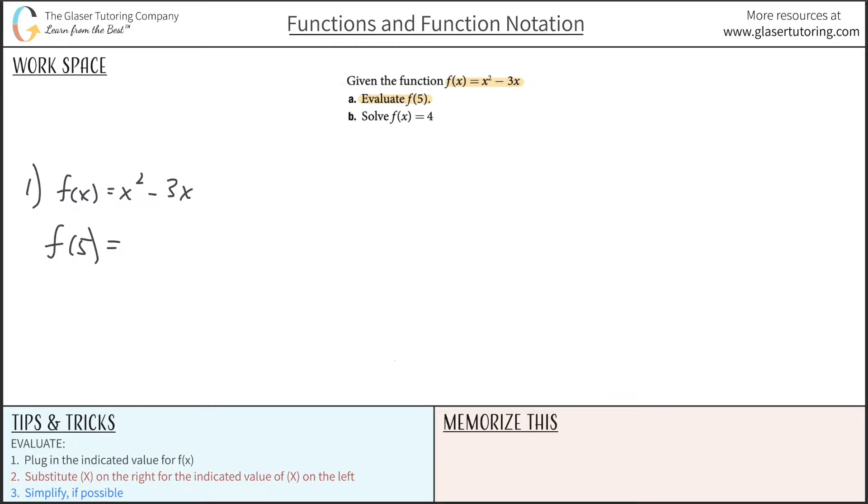So that means on the right-hand side now, wherever you see x, plug a 5 in for it. And we don't really need parentheses here, but I like to use them because in case if this value were negative, you'd want the negative included within that parentheses, so you square it appropriately.